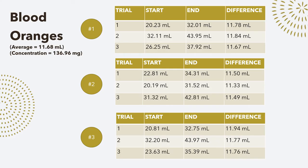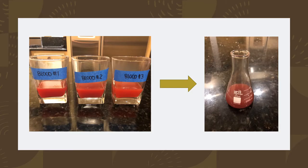For the blood oranges, I did the same number of trials as for the navel oranges. It took on average 11.68 milliliters of iodine to titrate it and it ended up containing 136.96 milligrams of vitamin C. You can see that the color was a bright red when it first started and then when it got titrated, it turned to a darker red.